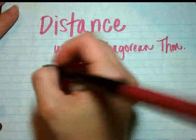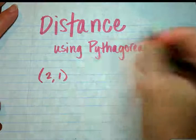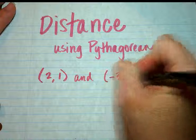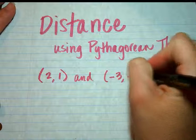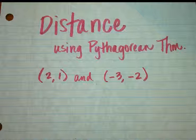So let's see, we'll just make up about 2, 1 and negative 3, negative 2. All right, if we were to graph these points,